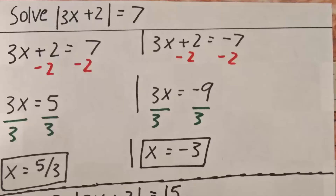In this video, we will solve two example absolute value equation problems. This is the first question. So we want to solve for x. We have the absolute value of 3x plus 2 is equal to 7.